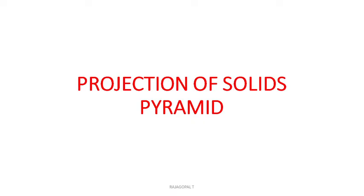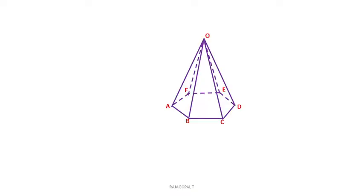Likewise, we will discuss more problems related to pyramid. So first of all, what is a pyramid? At the base, we will have one plane surface. If the plane surface is a hexagon, we can call it a hexagonal pyramid. If the base is a pentagon plane surface, we can call it a pentagonal pyramid. Likewise, we can name it depending on the base of the pyramid.